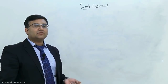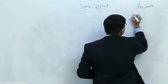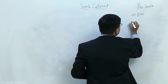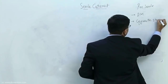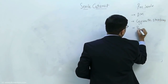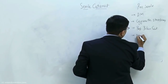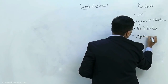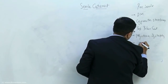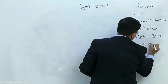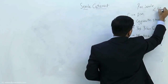Sometimes they ask what are the reasons for pre-senile cataract. The most important reason is diabetes. Then you can get it in patients of cigarette smoking, congenital conditions like posterior polar cataracts, sometimes due to syndromes like myotonic dystrophy or atopic dermatitis, or due to use of drugs like corticosteroids. These are the causes of pre-senile cataract, where there is cataract formation in less than 45 years of age.